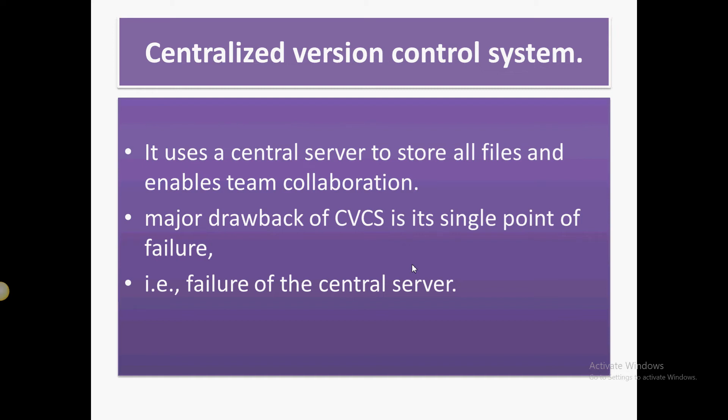Version control systems are of two types: centralized version control system and decentralized version control system. Git is a decentralized version control system. Now, what is a centralized version control system? A centralized version control system stores all files at one location — the central server.